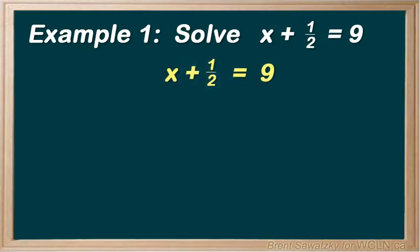So we just subtract 1 half from both sides, and this would make a simple solution. Except we remember, if we add or subtract fractions, we need common denominators. So we could certainly do this and get the correct answer, but let's consider an easier way.